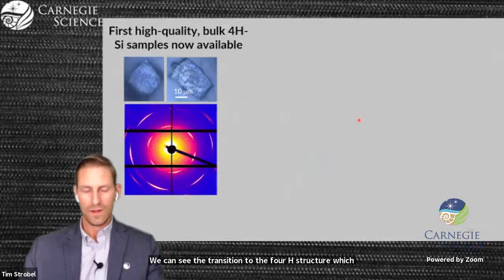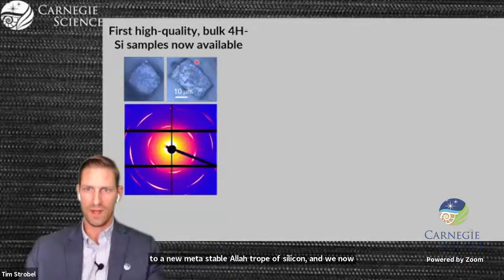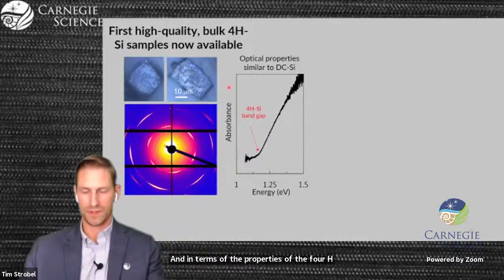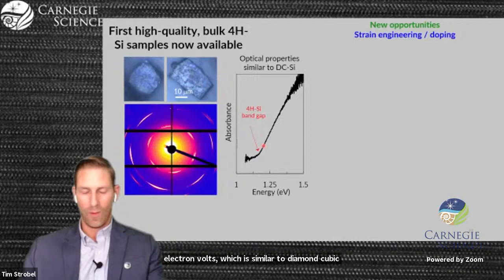So we're very excited to have discovered a novel pathway to a new metastable allotrope of silicon, and we now have the first high-quality bulk 4H samples. In terms of the properties of the 4H phase, they're actually very similar to the diamond cubic phase that's found in your electronic devices. For example, it has an indirect band gap near 1.1 or 1.2 electron volts.